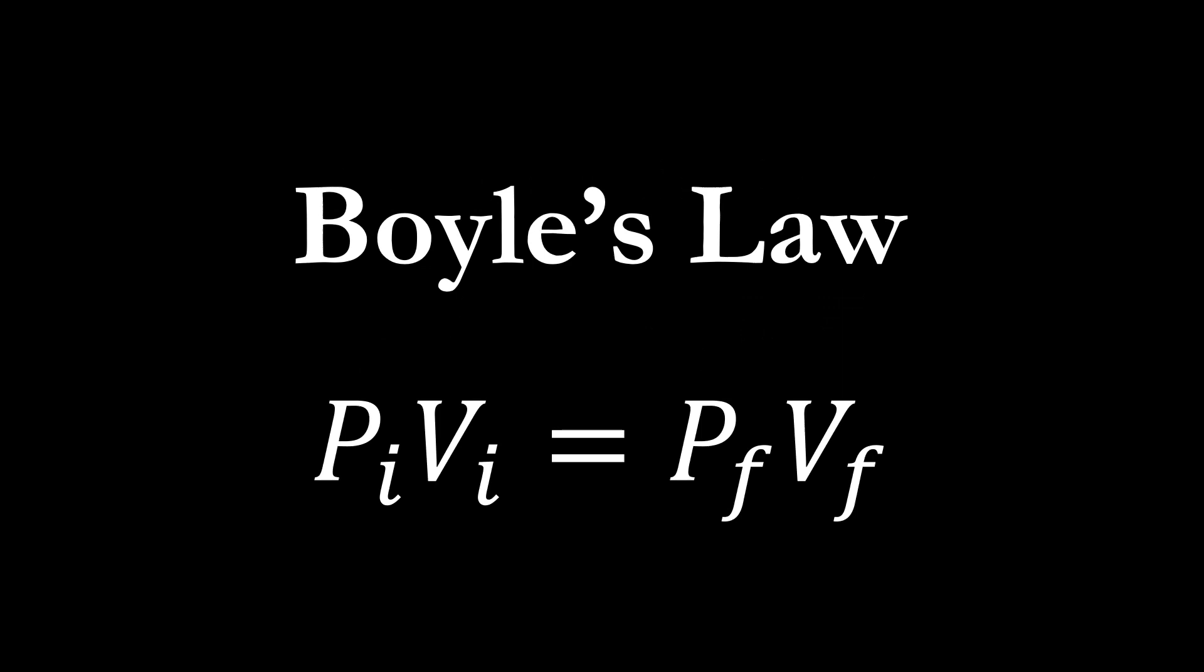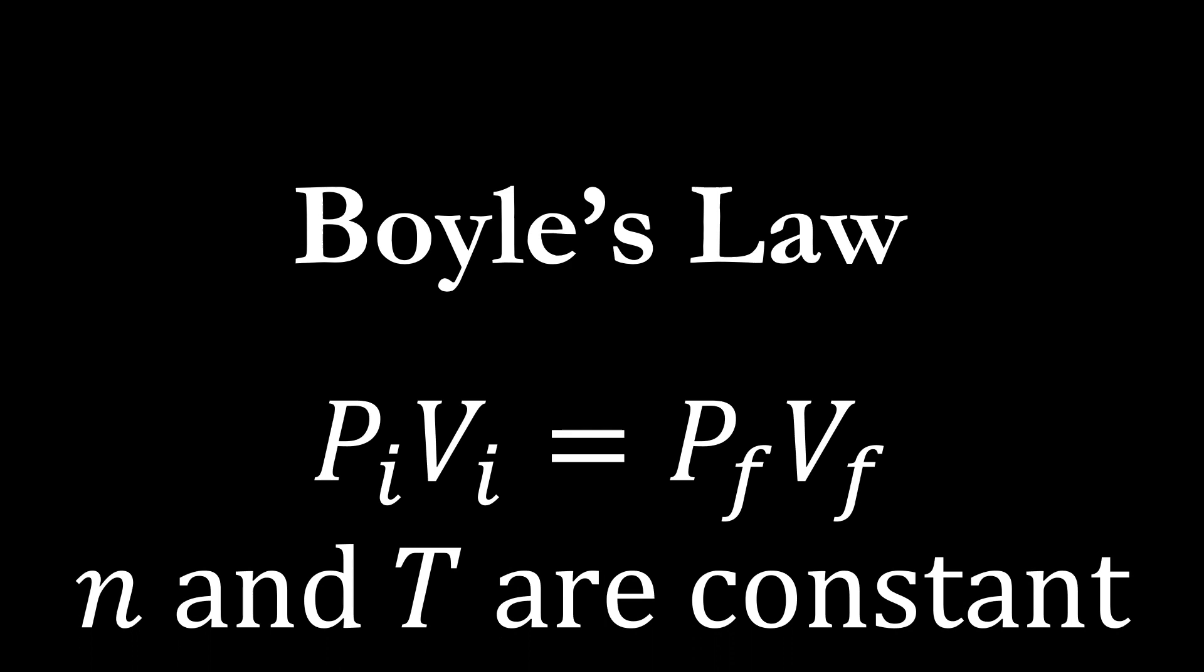Now, in Boyle's law, we have an initial state and a final state, which is represented in the equation by the subscripts I and F. And the variables that are not included in the equation are held constant. So n, the number of moles, and T are constant in the initial state and the final state.